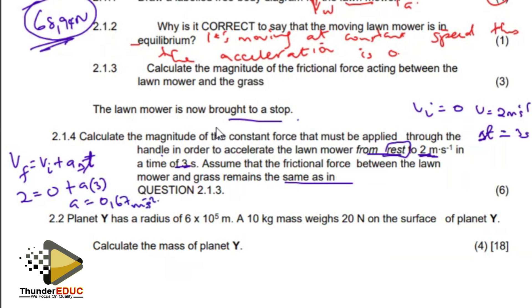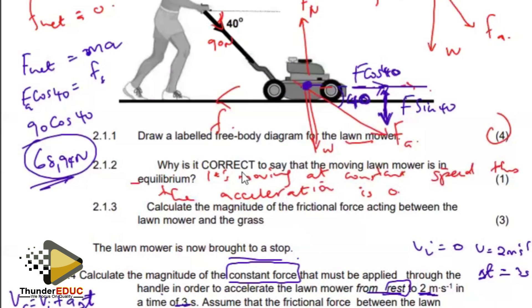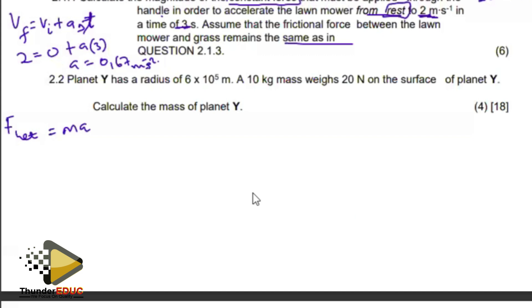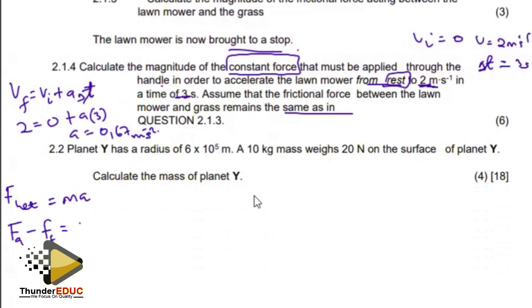If I apply F net equals MA, what I need is the constant force F. But we know that the horizontal component has to be F cosine 40. I'm going to say F applied minus my frictional force should equal the mass of the lawnmower. They told us the mass is 15 kilograms, multiplied by the acceleration that we just got.